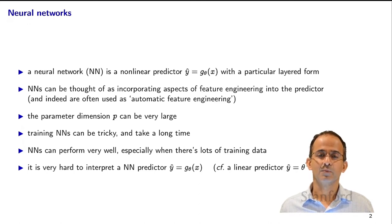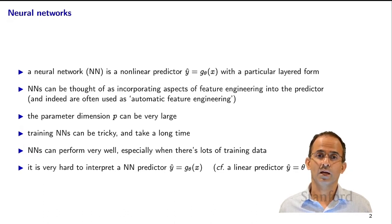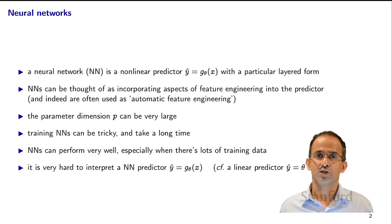If you compare that with a linear predictor, where y-hat is theta-transpose x, then the meaning of the individual entries of theta is very clear — it tells us how much increasing certain components of x affects the prediction y-hat. For a neural network, it's extremely difficult to interpret what the particular parameters mean; what does theta-i actually mean?